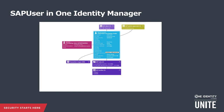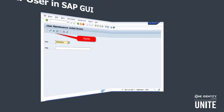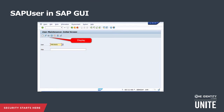The SAP user account, as seen in the hyperview representation in One Identity Manager, contains the relationship between the roles and profiles from the SAP client as well as the link to the employee or person record in One Identity Manager. The same information can be displayed in the SAP GUI using the SU01 transaction.